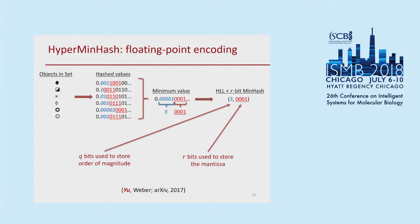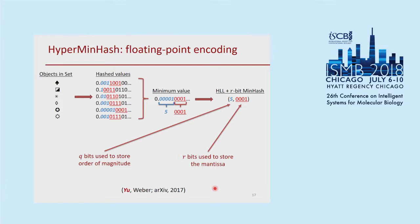I'll jump to the punchline. You start with all your items in the set, hash them to a value between zero and one, and do the binary expansion. Then instead of storing a fixed number of bits, you store the entire number in floating point notation: first you specify the position of the first one bit — this is the order of magnitude, exactly what HyperLogLog stores — and then you use an additional R bits to store the mantissa, the stuff after the decimal point in scientific notation. Since you're storing a fixed number of bits R for the mantissa and Q for the exponent, this is O(log log n) asymptotic space complexity.